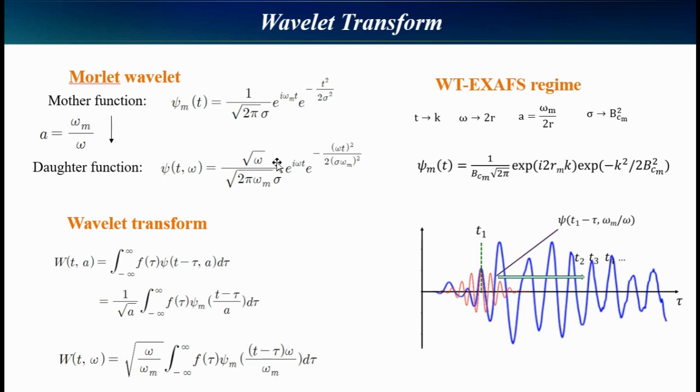Now we need to change time-frequency regime to momentum-position regime to apply chi-EXAFS. Therefore, the regime is changed time to k and frequency to position with two multiplications. And the sigma in mother function is changed to eta times k squared for new wavelet later, which is called eta-wavelet.